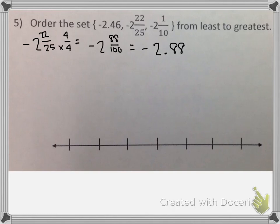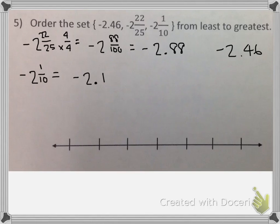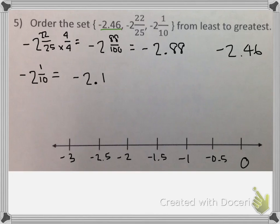I can do something similar with negative 2 and one-tenth. I know exactly where to put a 1 behind a decimal to represent one-tenth, so I have negative 2.1. And then I also have negative 2 and forty-six-hundredths, which is already written as a decimal. Now I have to number my number line. Everything's going to be negative and I'm going to count by halves. Negative 2 and forty-six-hundredths is going to be in between negative 2 and negative 2 and five-tenths, because negative 2 and five-tenths is equivalent to negative 2 and fifty-hundredths. So I've got that there.